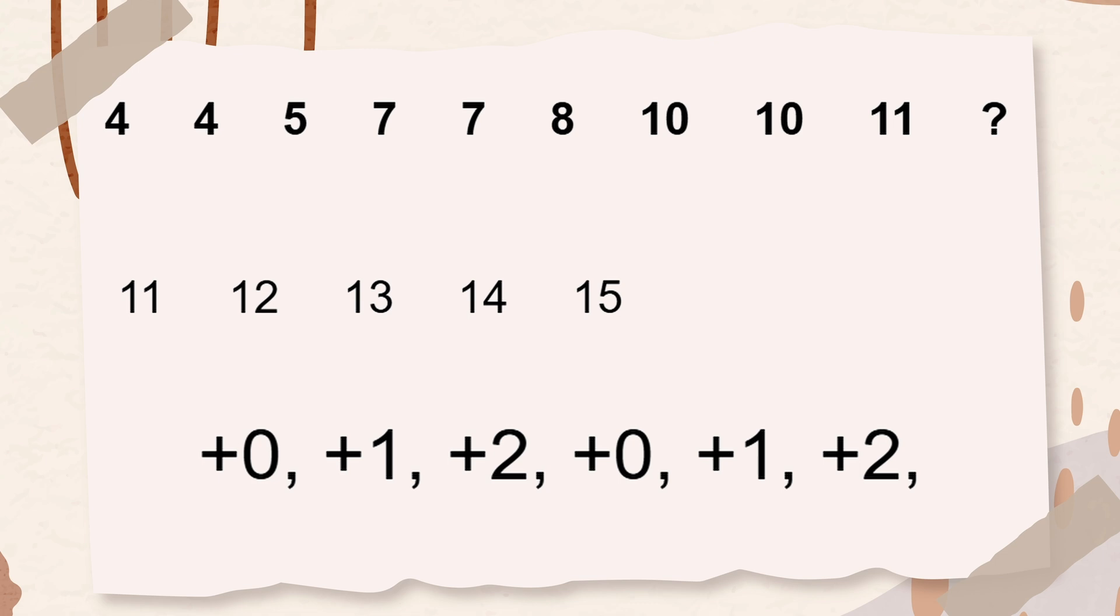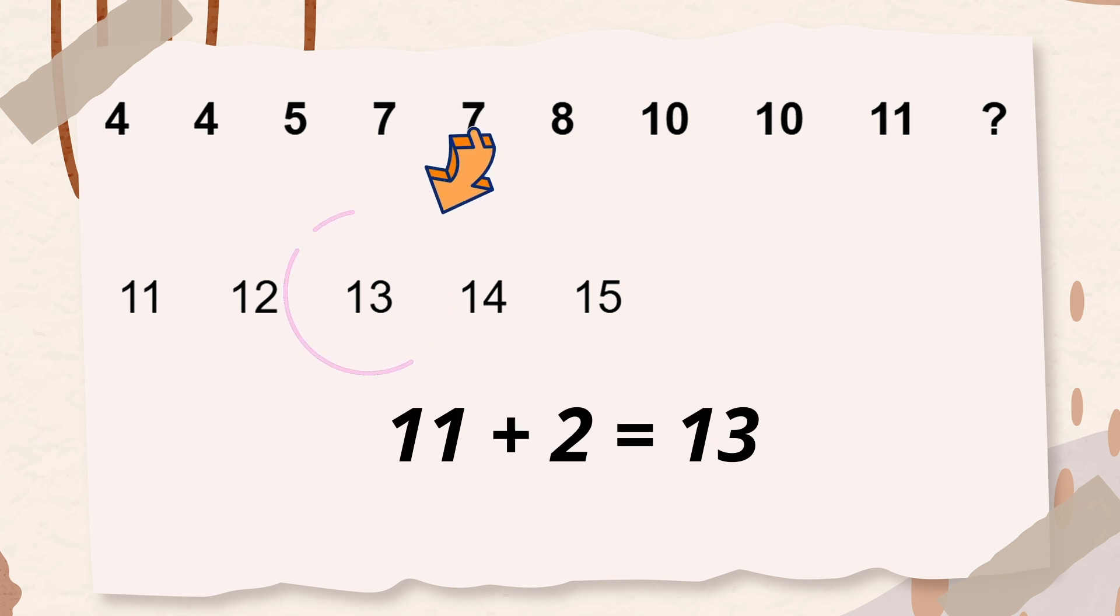The last three numbers in the series are 10, 10, and 11. 10 is larger than 10 by 0, and 11 is larger than 10 by 1. Therefore, the next number in the series should be larger than 11 by 2. So 13 is the correct answer.